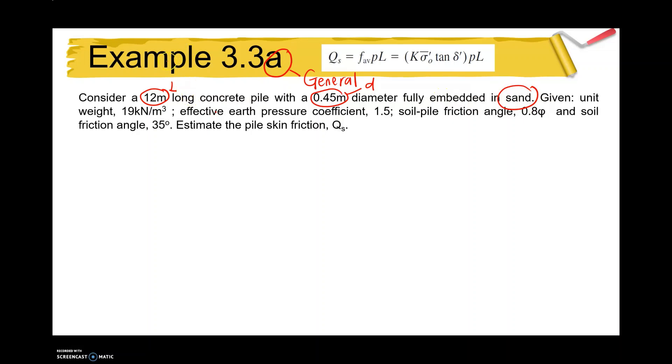Given the unit weight, the effective earth pressure coefficient K naught, and the soil-pile friction angle delta prime, which is delta prime equals 0.8 phi, and soil friction angle phi equals 35 degrees. The question asks you to estimate the pile skin friction, the Qs.